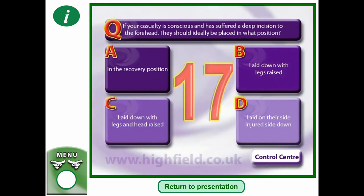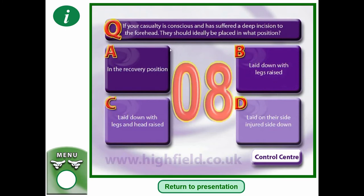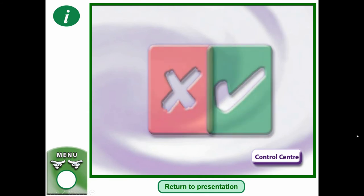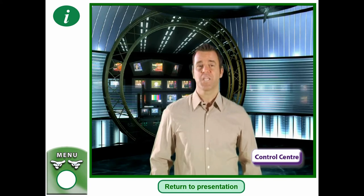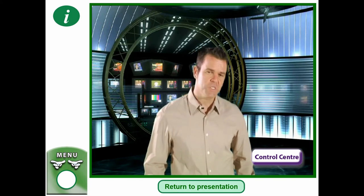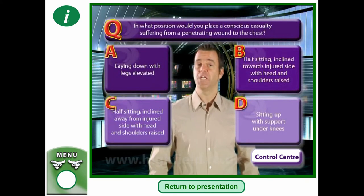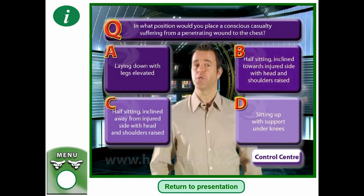The answer is C — laid down with legs and head raised. Next question: for a wound to the chest, a) laying down with legs elevated, b) half sitting inclined towards injured side with head and shoulders raised, c) half sitting inclined away from injured side with head and shoulders raised, or d) sitting up with support underneath.